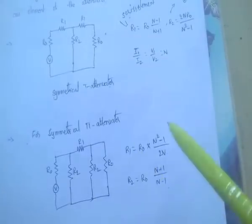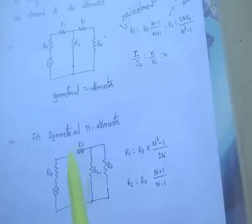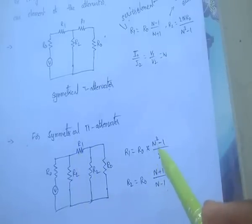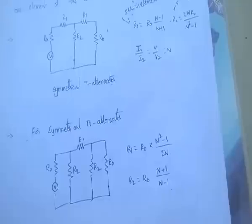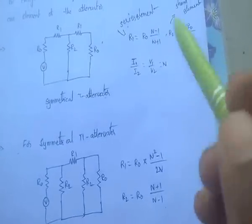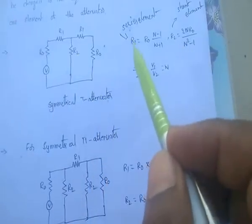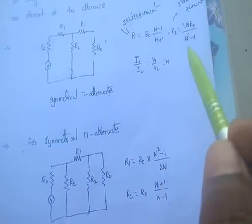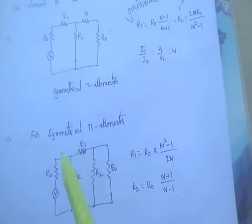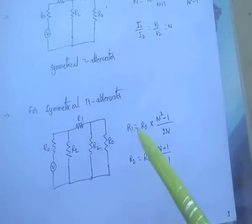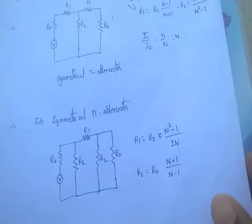For the symmetrical pi-type network: R1 is the series element and R2 is the shunt element. The formula for series element R1 = R0 × (n²−1)/(2n), and shunt element R2 = R0 × (n+1)/(n−1). The pi-type is in the form of pi, which is why it is called a symmetrical pi-network.